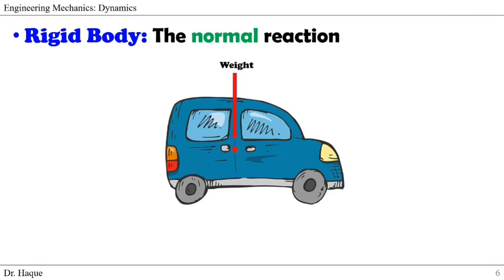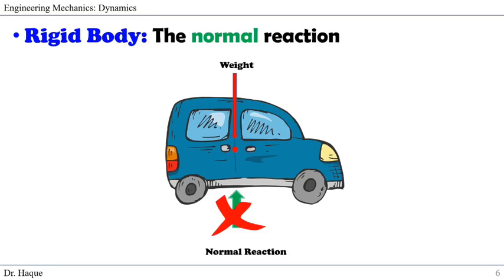There is also a difference in the normal reaction when we assume a body as a particle versus a rigid body. In the example of the car, the weight acts downward toward the mass center. For a particle, the normal reaction would be directed against the weight toward the mass center. But for a rigid body, we cannot assume the reaction force is toward the mass center — since we have to consider the rotation tendency, we have to assume the reaction forces act at the tires.